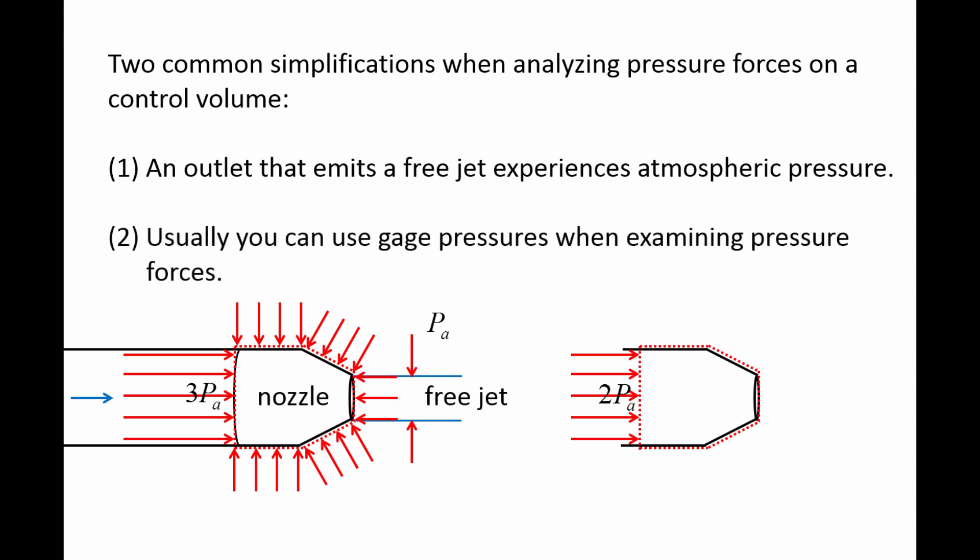So the second approximation is that you can usually use the gauge pressures when examining pressure forces on a control volume because atmospheric pressures cancel out in all directions.